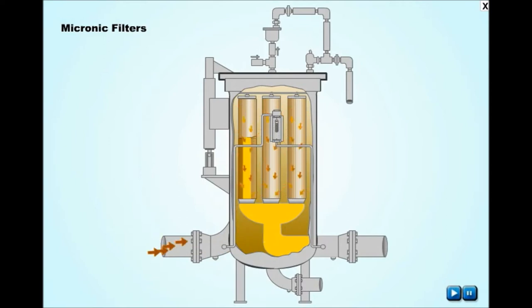Micronic Filters are installed after the strainers in the system. These are designed to remove fine particulates such as rust, dirt, sand, and pipe scale from aviation fuels which cannot be removed by the strainers.